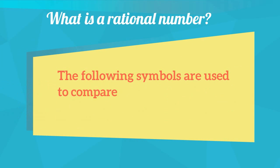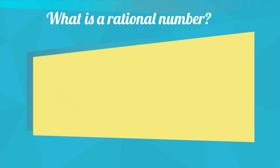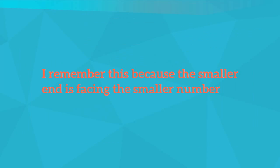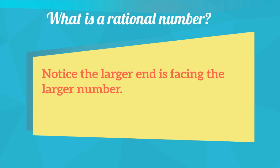The following symbols are used to compare rational numbers. This symbol equals less than: 5 is less than 7. I remember this because the smaller end is facing the smaller number. This symbol is greater than: 7 is greater than 5. Notice that the larger end of the symbol is facing the larger number.